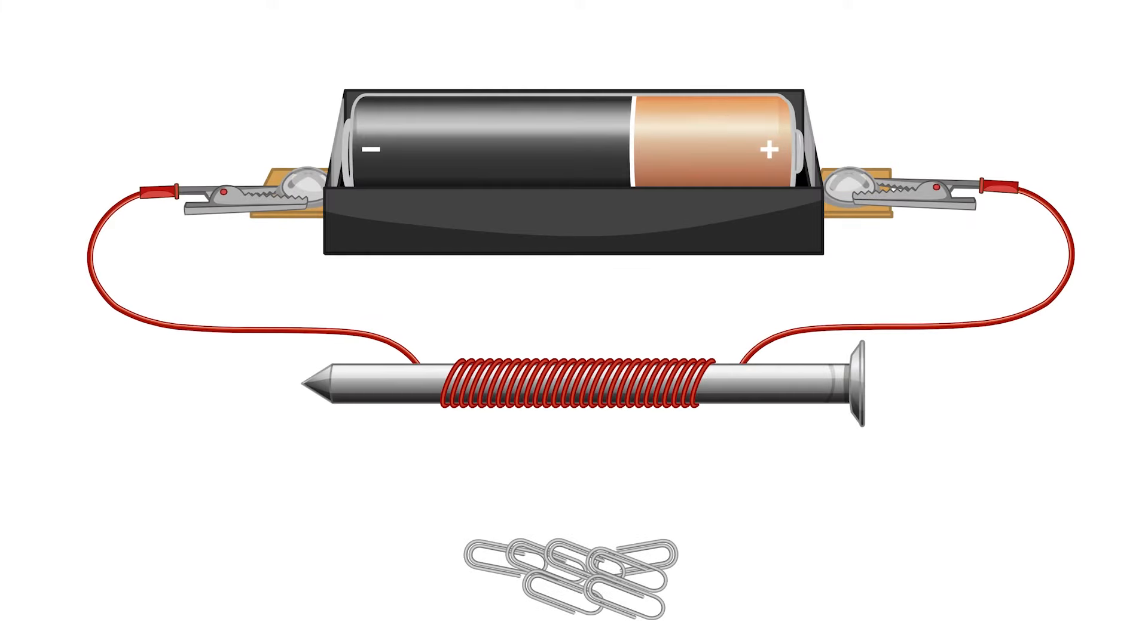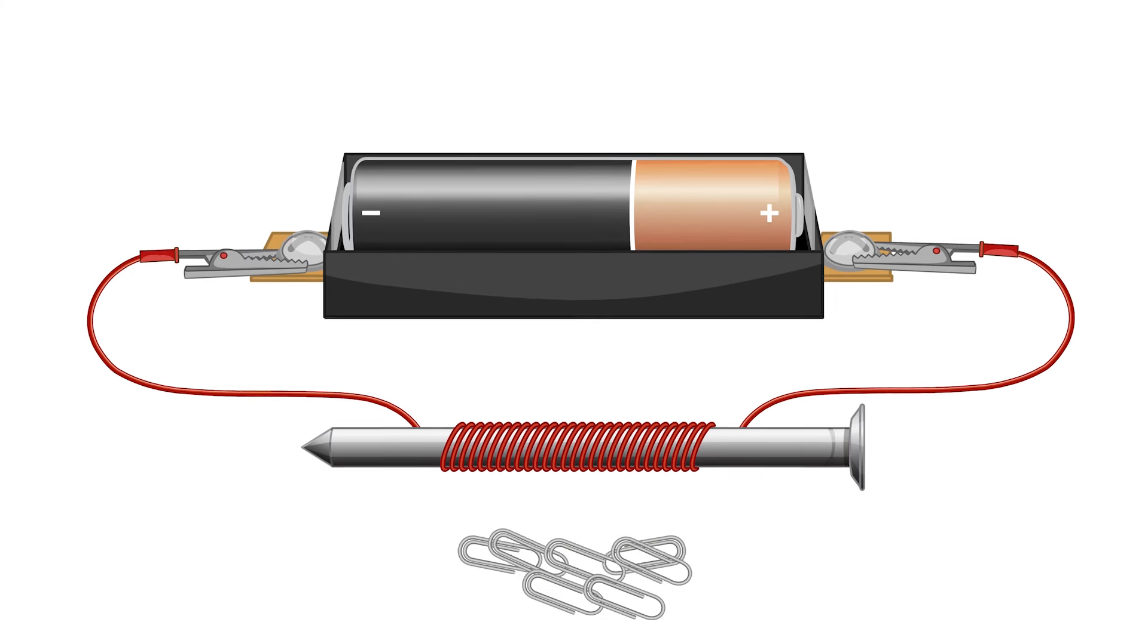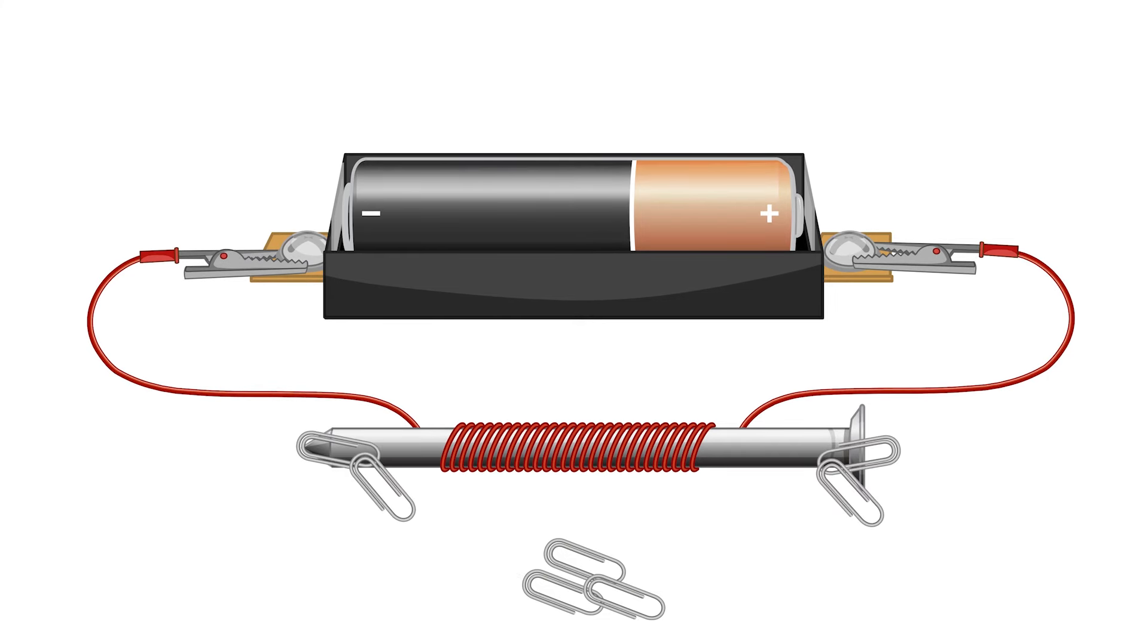What effect do you think adding more coils of wire will have on the strength of the electromagnet? Yep! Increasing the number of coils increases the magnetic force of the electromagnet, and more paper clips are attracted.